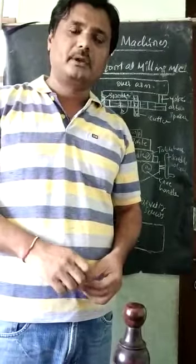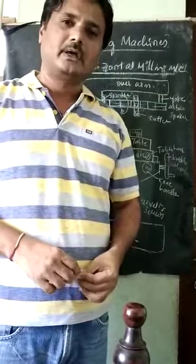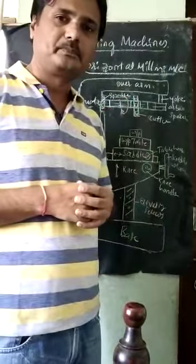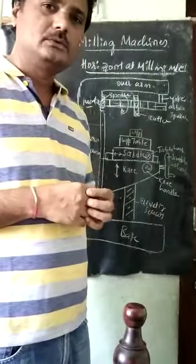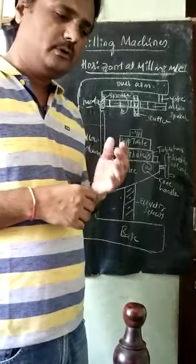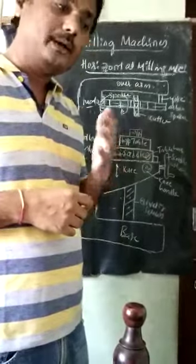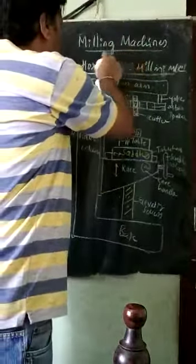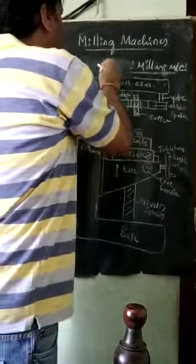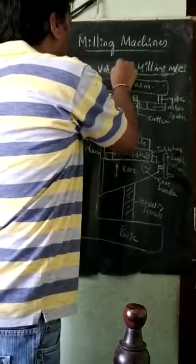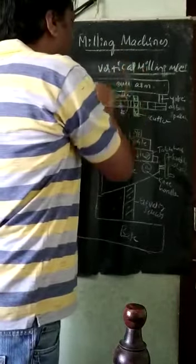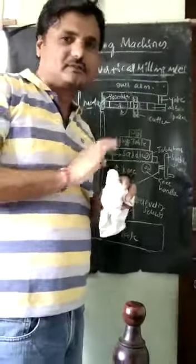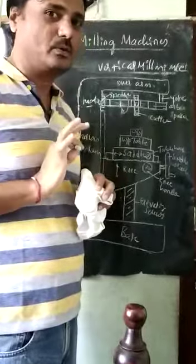Welcome back everyone. As we have studied the horizontal milling machine, now we can convert it into a vertical milling machine. So I will now convert this diagram. What has to change in this diagram? Only the top part will change.